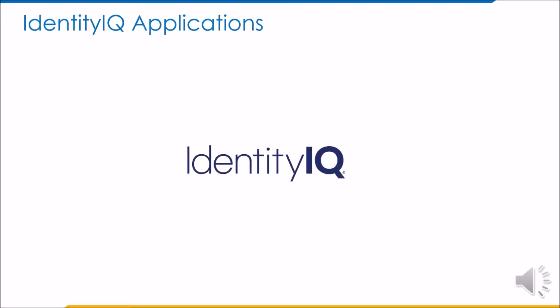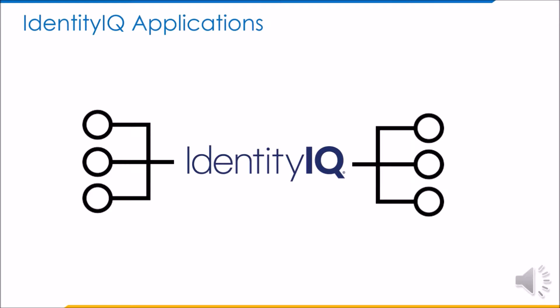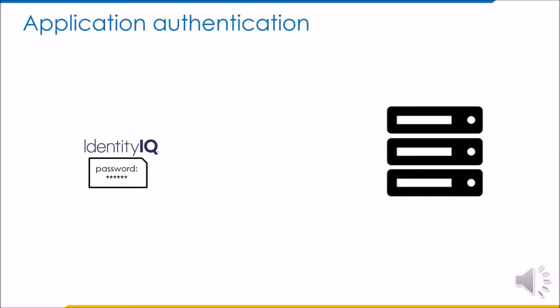Identity iCube enables identity management to a large number of systems with the help of connectors. The majority of the targets require authentication. The credentials for the authentication are stored as part of the application configuration on Identity iCube. When Identity iCube wants to establish a connection to the target system, it authenticates itself using the stored password.